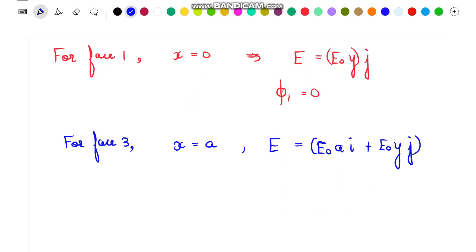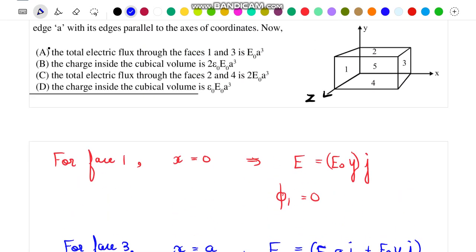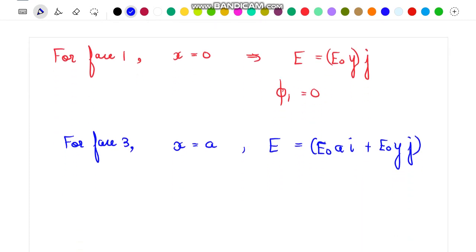Now since flux through face 3 will be only due to x component of field. As you can see, only the x component of field will be responsible for creating the flux through face 3. So we can write the flux passing through face 3 will be equal to the x component of field, that is E₀a, multiplied by its area. That is E₀a³ is the flux passing through face 3.